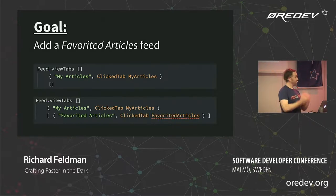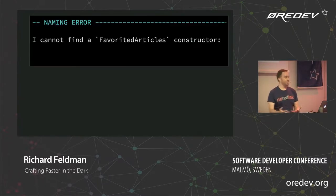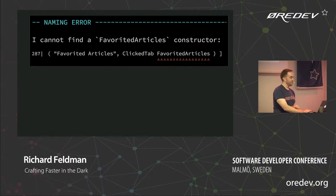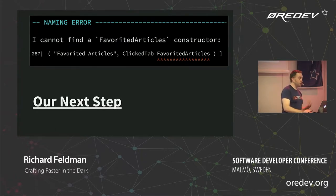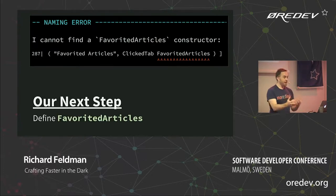So I added an unselected tab after my articles — that's where we got our first error. It squiggly underlined indicating: hey, this is not a thing. You have not actually created that yet. Specifically it said naming error: I cannot find a favorited articles constructor. And it underlined it in the CLI too, though the editor is a little bit nicer. From this error we know the next step: we need to actually define this thing.